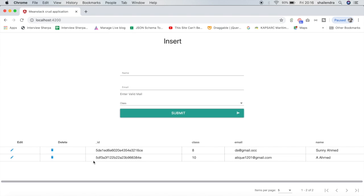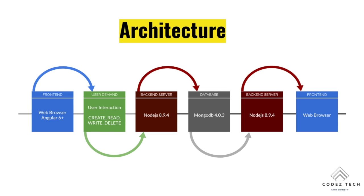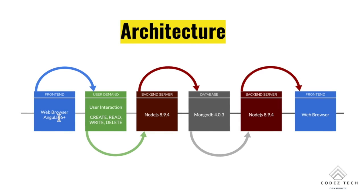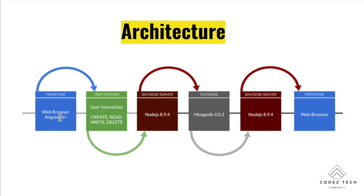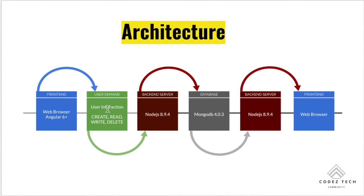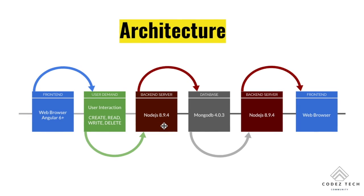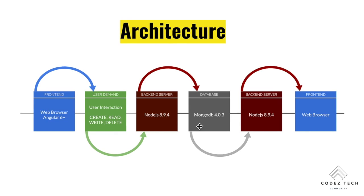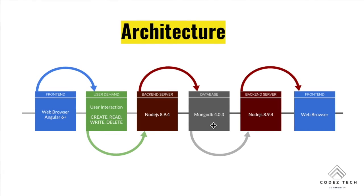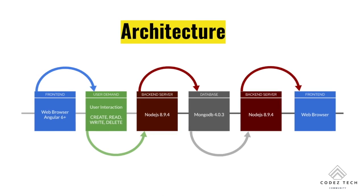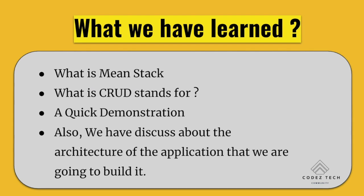This is the application we are going to build. In terms of architecture, the front end uses Angular 6, and all interactions — Create, Read, Update, and Delete — are handled through Node.js. Node.js acts as a mediator that communicates with the MongoDB database and sends data back to the front end.